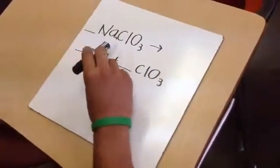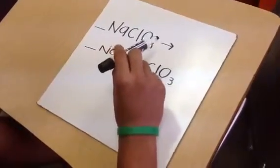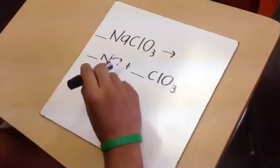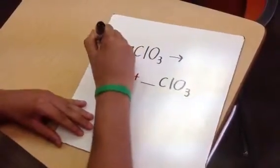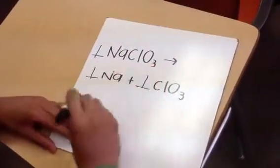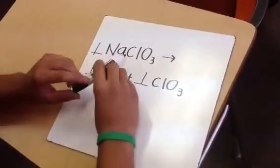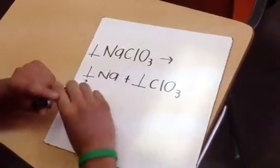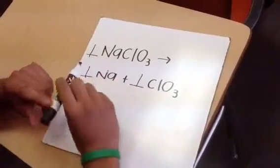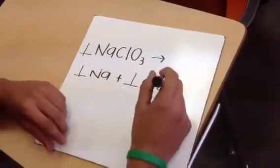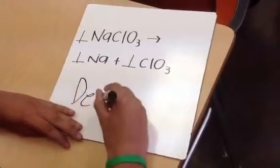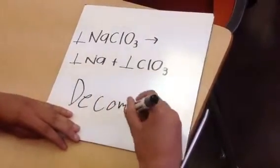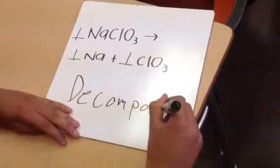For this equation, NaClO3 decomposes to Na plus ClO3. And to balance it, you put 1 here, 1 here, and 1 here. So you just have 1 Na, 1 Cl, and 3 O's. And for the bottom, you have 1 Na, 1 Cl, and 3 O's. And this is decomposition.